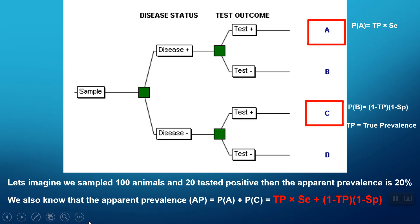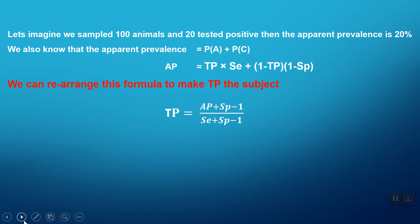So if we have these 100 animals and 20 tested positive, then the apparent prevalence is 20%. And we also know that the apparent prevalence equals that formula of true prevalence times sensitivity plus one minus the true prevalence times one minus the specificity.